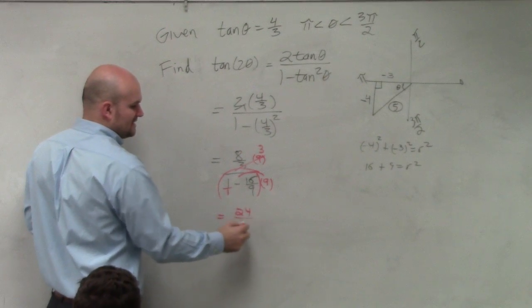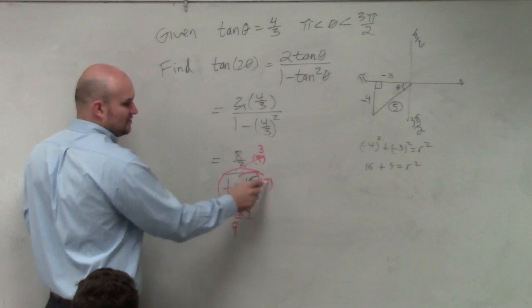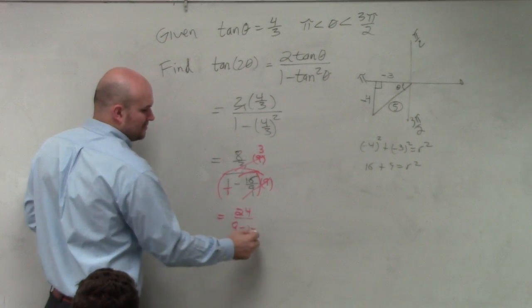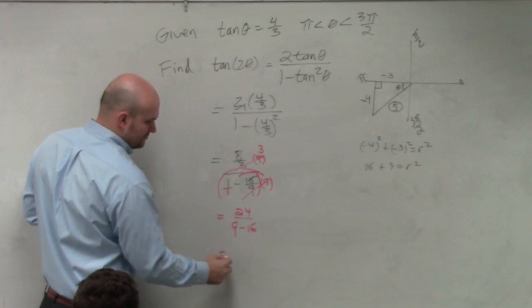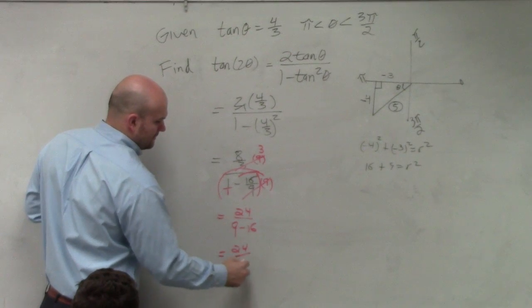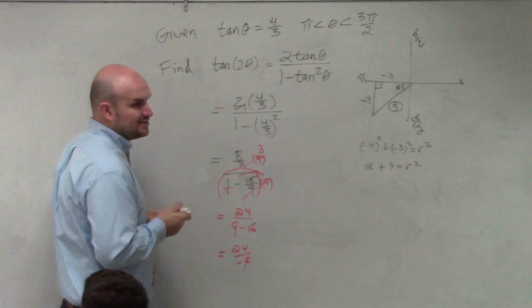9 times 1 is 9. Those 9 times 16 over 9 just gives you 16. And that's your final answer.